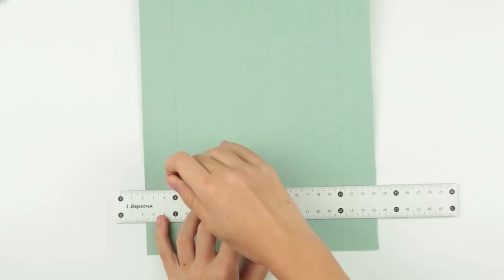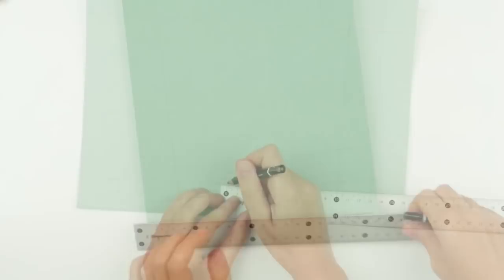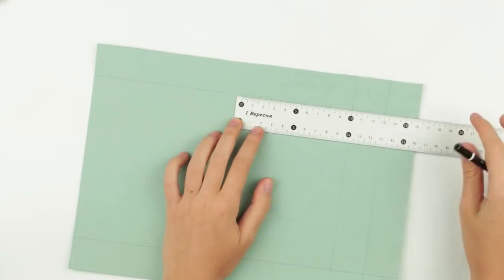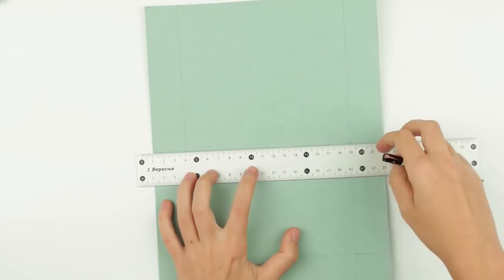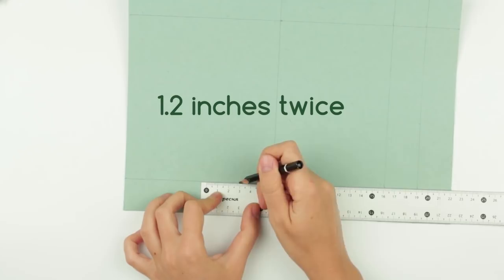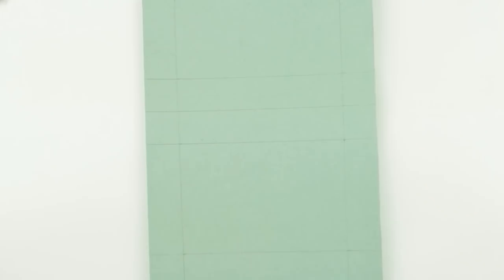Measure 4 inches from your last mark on both sides. Connect the marks. You've got the base of the box. Measure 1.2 inches twice again. Connect the marks on both sides. This is the template of a gift box.